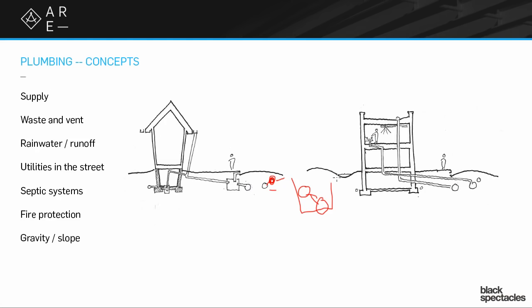A couple of terms that are sort of worth noting, the idea of gravity and slope and pressure. When we're talking about water-based systems, if we're talking about anything in terms of supply, the supply has to be pressurized. So the pipe has water pressure in it.